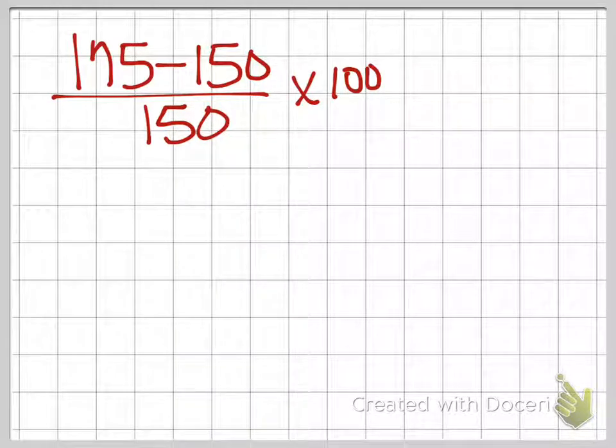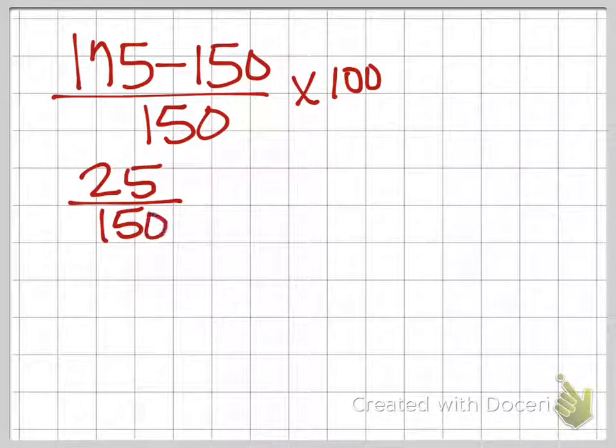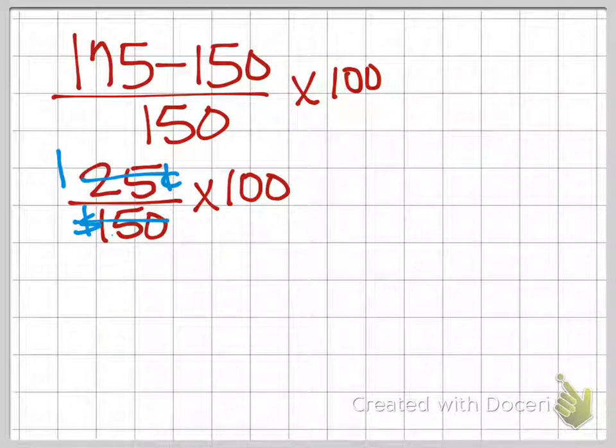150 over 150 times 100. I'm actually going to leave some stuff not broken down. You'll see why. So 175 minus 150 is 25. I'm going to leave this 150 whole and leave the 100 over here. The reason is that I'm going to think about this as quarters and dollars. So I'm going to think of this as 25 cents, and I'm going to think of this as $1.50, and I know that there are six quarters in a dollar. So 25 goes into itself one time, and 25 goes into 150 six times.